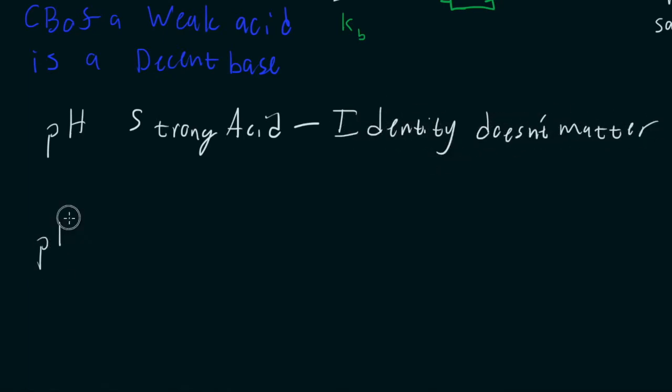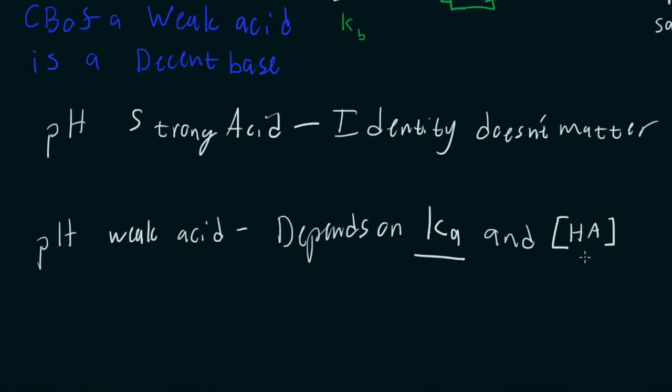But for the pH of a weak acid, the pH of a weak acid will depend on Ka and the initial concentration of that acid. So notice I wrote HA here. This A stands for acid. So we start to just use this abbreviation when we start to make generalized equations. So if Ka and HA are the two factors that are going to play a part in the pH of a weak acid, how do we actually use that? How do we actually figure out the pH of a weak acid?